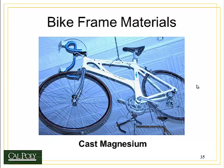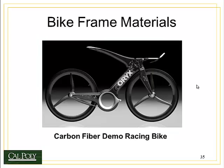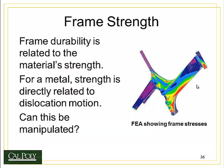Then there are the extreme versions: cast magnesium bicycles, which are cast as one part and don't require any welding. Or how about a carbon fiber demonstration bike? I can't even figure out where you sit on this thing. When it comes to bicycle frames, the thing we want to look at is frame strength and stiffness. We're going to look primarily at frame strength in this topic because we're talking about strength and defects in crystals.